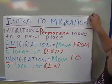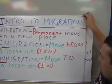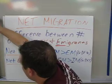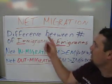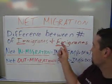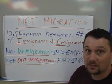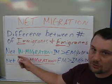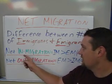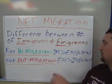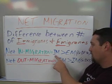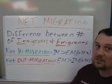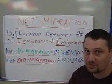Once we have those two statistics for a country, you can determine what is called net migration. Net migration is the difference between the number of immigrants and emigrants. If a country has net in-migration, that means they have more immigrants — people coming into the country — than people leaving the country or city.